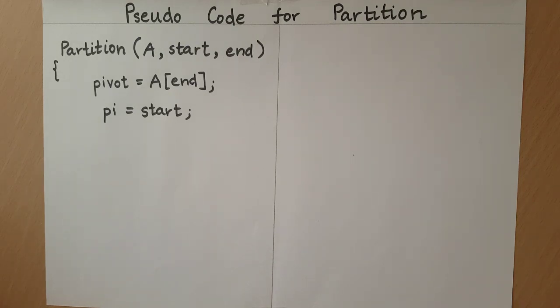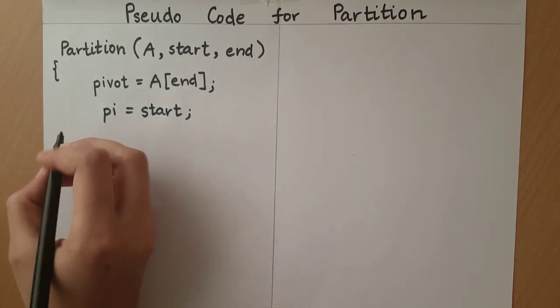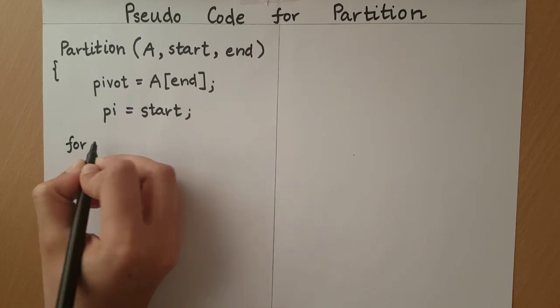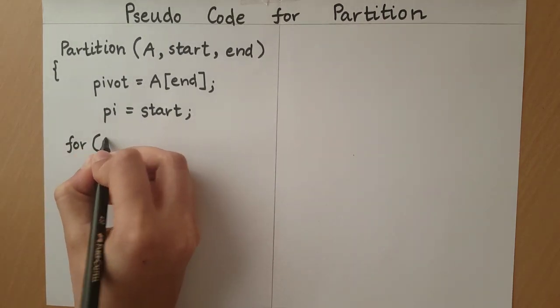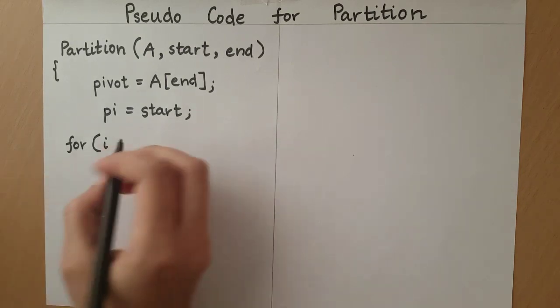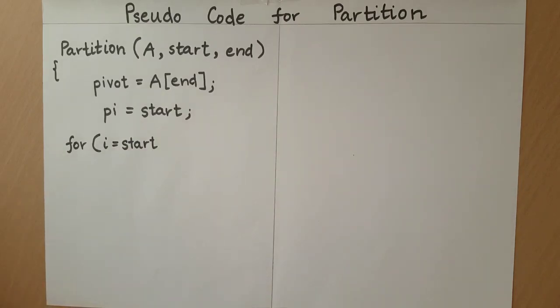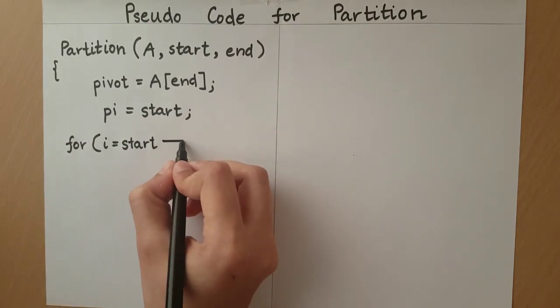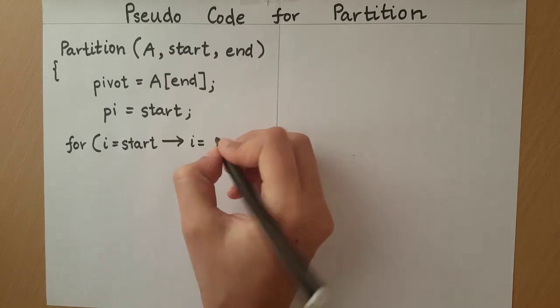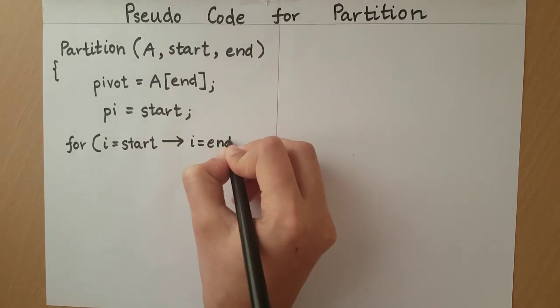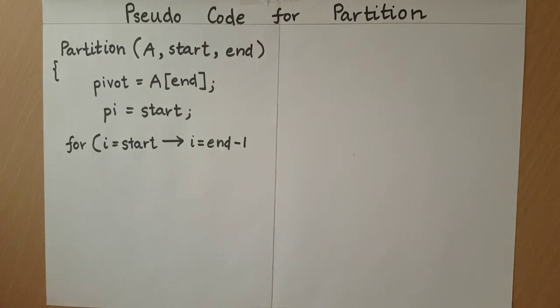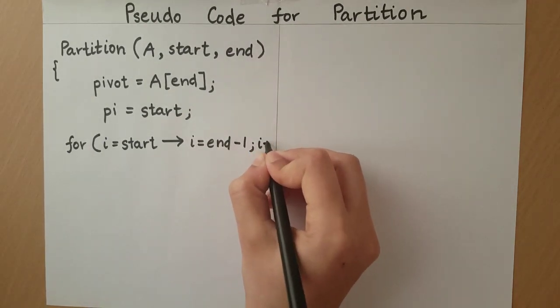Now, we must traverse the array using a variable i from the start index up till the pivot. We will run a loop with counter variable i. It will start at index start and it will end at index end minus 1. At each time, we will increment this i.